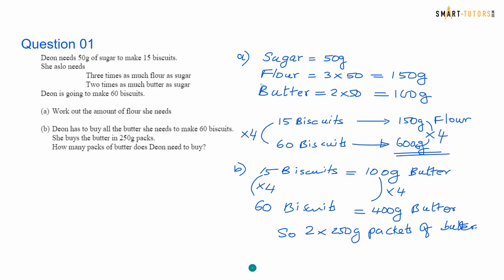Sugar is 50 grams, so flour is 3 times, so 3 times 50 is 150. Butter is 2 times of sugar, so 2 times 50 is 100 grams. So 15 biscuits require 150 gram flour. 60 biscuits is 4 times, so 4 times 150 is 600 grams. Second part, Dionne has to buy all the butter she needs to make 60 biscuits. She buys the butter in 250 gram packets. 60 biscuits need 400 gram butter. So you need 2 packets of butter, 2 times 250 is 500 grams, which is enough for the 400 grams.